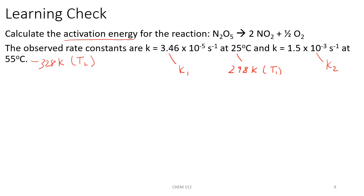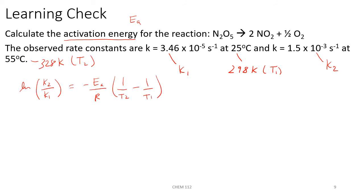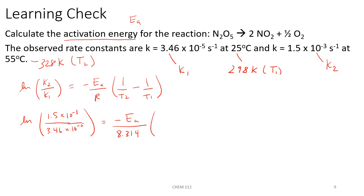In this case, we're trying to find the activation energy, Ea, for the reaction. Using our two-point form of the Arrhenius equation, we'll have the natural log of K2 over K1 equals negative Ea over R times 1 over T2 minus 1 over T1. Plugging in, we have ln of K2 which was 1.5 times 10 to the negative 3rd, over K1 which was 3.46 times 10 to the negative 5th, equals negative Ea over R value of 8.314, times 1 over T2 which is 328 Kelvin, minus 1 over T1 which is 298 Kelvin.